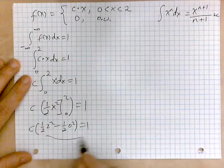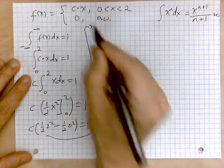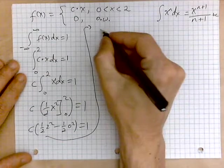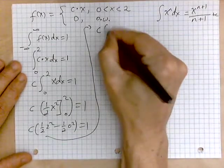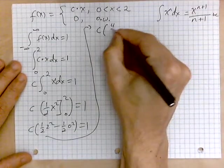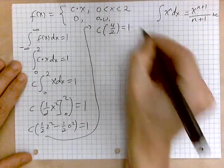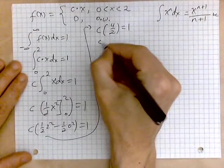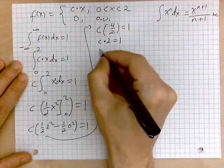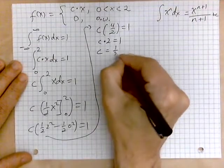So I'm going to draw a little line to indicate we've moved on to another portion of the page. So we have c of 4 over 2 equaling 1. That's the same as c times 2 equaling 1. Which means c equals 1 over 2.